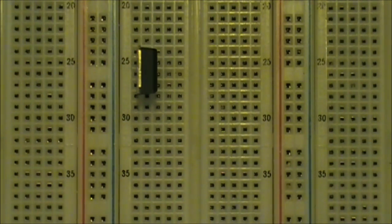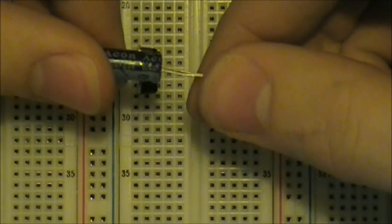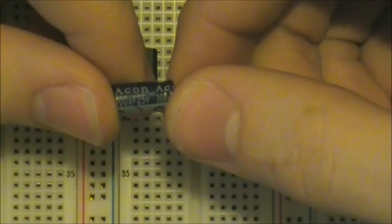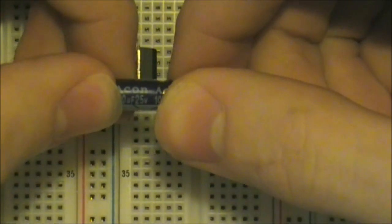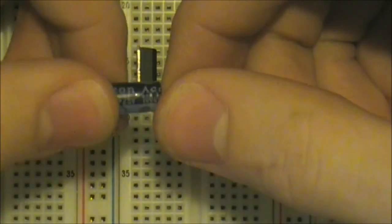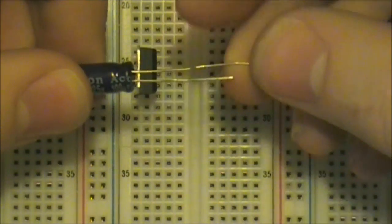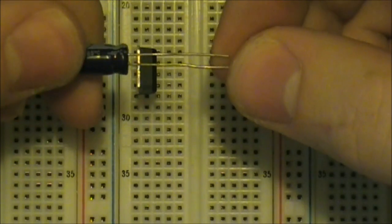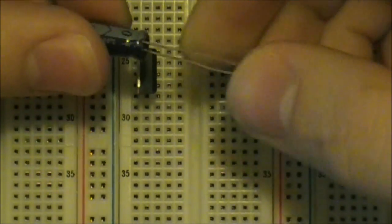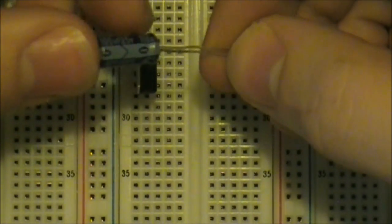Next, we need to identify our 100 microfarad capacitor. So I've got the capacitor right here. It says 100 microfarad, and it's rated for up to 25 volts. So we'll be fine, as long as we don't supply more than 25 volts. So the capacitor, we need to locate the negative, since this is an electrolytic capacitor, it has polarity.